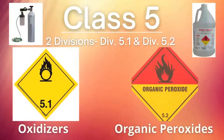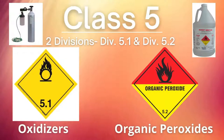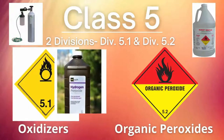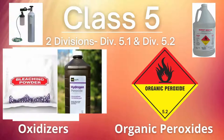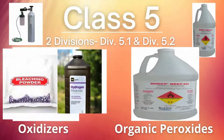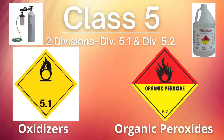Next is Class 5. It has two divisions: Oxidizers and Organic Peroxides. Apart from oxygen cylinders, bleaching powder and hydrogen peroxide are common examples of oxidizers. Various hydroperoxides used in the chemical industry serve as organic peroxides.